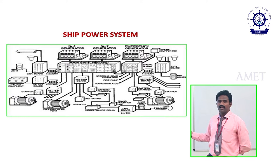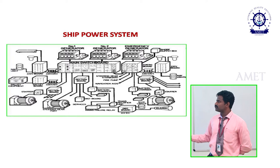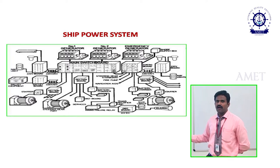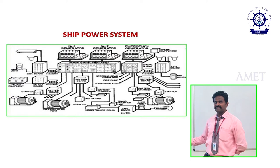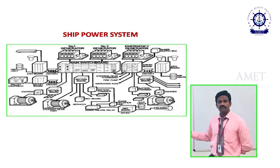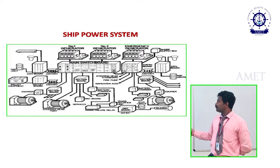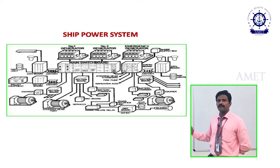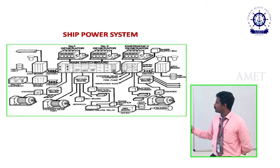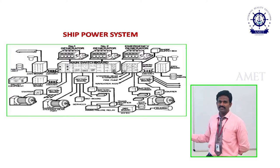When the power is cut off due to any blackout situation, the power to the main switchboard will be cut off. Within the next few seconds, the emergency generator will power on and supply power — not to the entire ship, but to some important loads from the emergency generator.